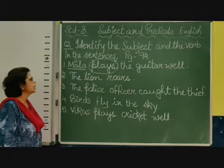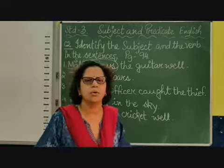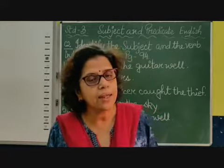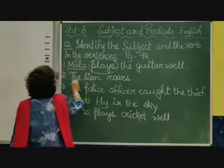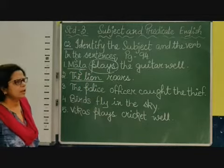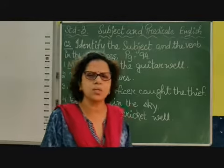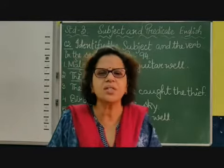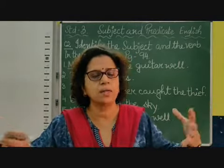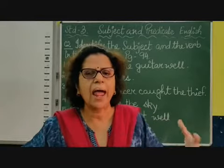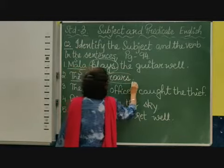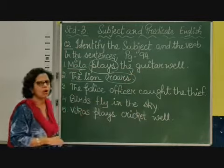Coming to the second one, children: The lion roars. As you know, in this sentence we are talking about the lion, so the lion is the subject. I underline it and write S. In this sentence, roars is the only word left and you know it is a verb — it means the lion is making a sound, that is an action it is doing. I circle roars and write V — that is your verb.